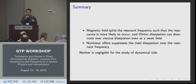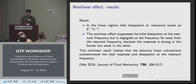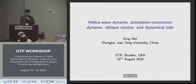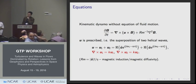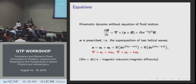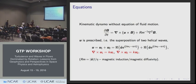Summary: magnetic field splits the resonant frequency, making resonance more likely to occur; ohmic dissipation can dominate over viscous dissipation even at weak magnetic fields; and nonlinear effects suppress tidal dissipation near resonance. Neither effect is negligible for the study of dynamical tides. In the Q&A, a questioner asks whether the scale of the generated magnetic field changes with k and Rm — whether it's always at large scale (k=1) even at high Rm and high k. The speaker responds that in mean field theory, you always get large-scale dynamo, with no small-scale dynamo component.